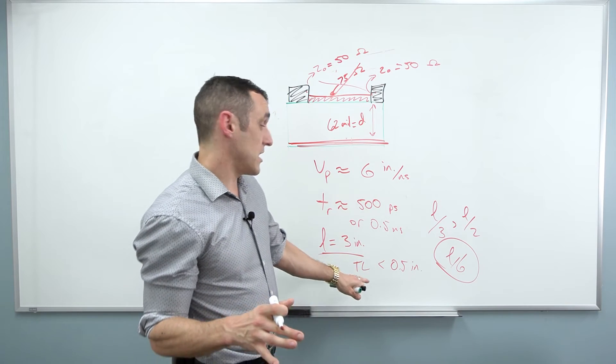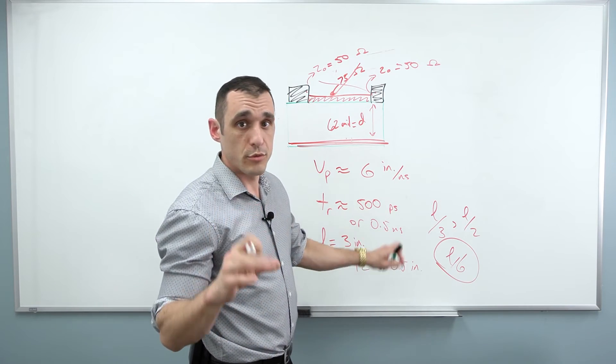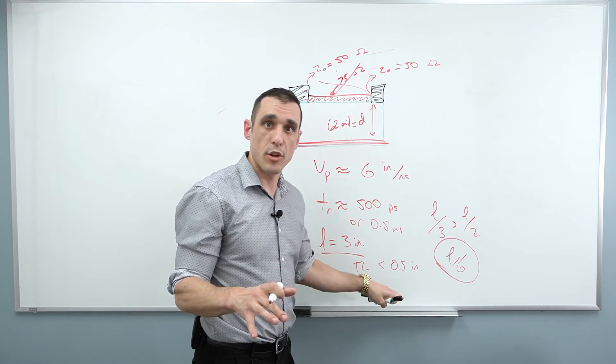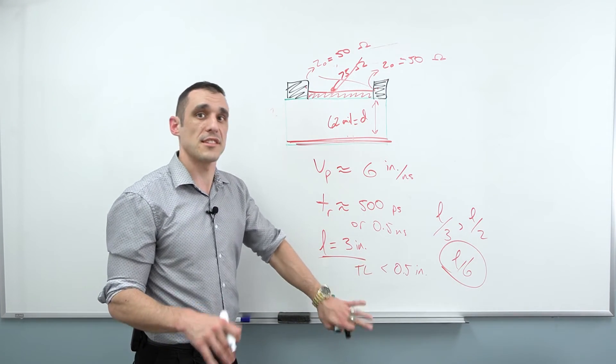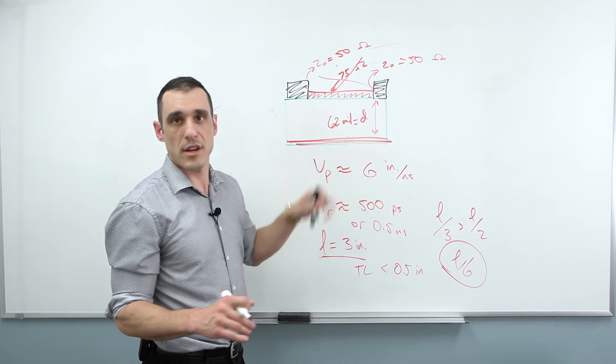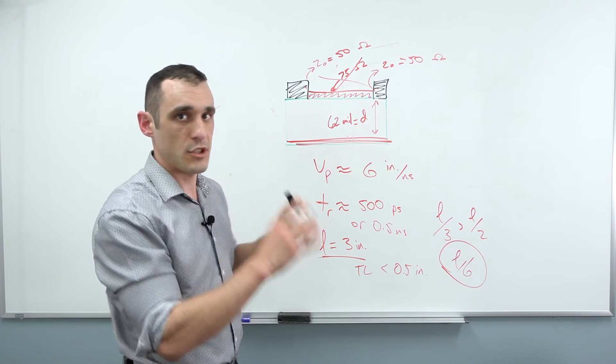This is not actually an out of the blue number. This is not a crazy small number. It's not a crazy large number. This is just typical. So 0.5 inches is a nice safe value. Keep your trace lengths below that and you should be just fine.